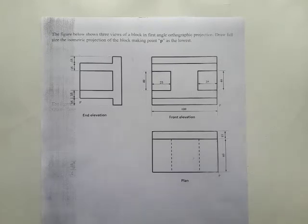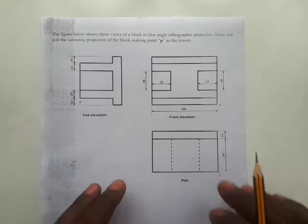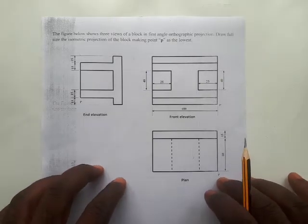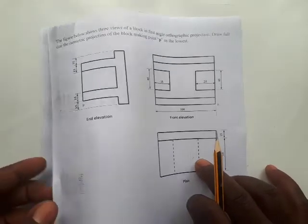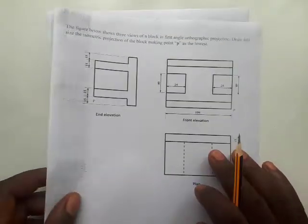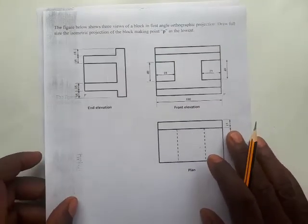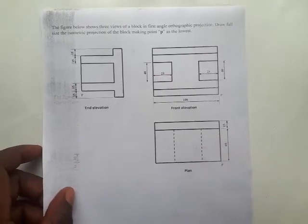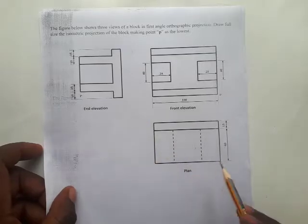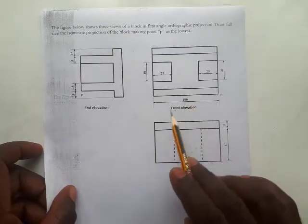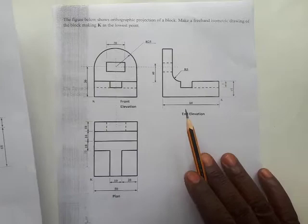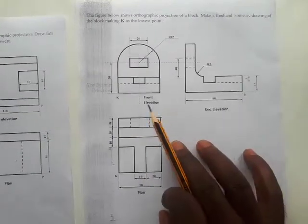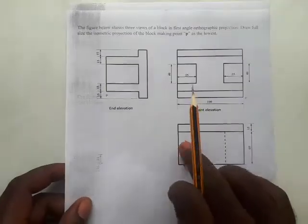Hi everyone, welcome to my channel, my name is Fred. We are going to look at some examples sent to me by Ghanian students — two orthographic questions. These are orthographic questions: conversion from orthographic to isometric. You've been given three views — the front elevation, end elevation, and plan — and you are expected to draw the isometric view of this block. This video is going to be in two parts; this is part one.